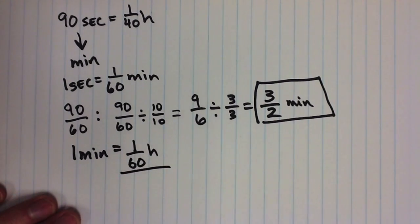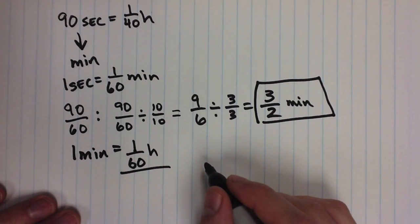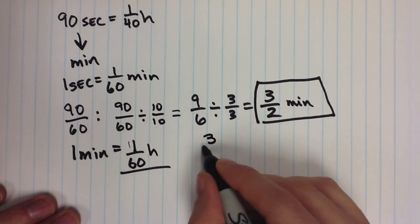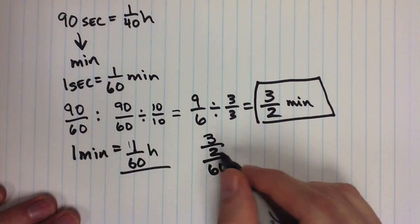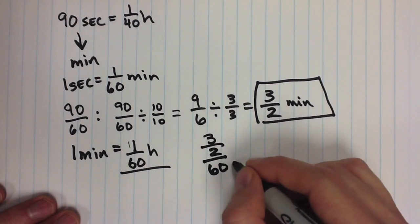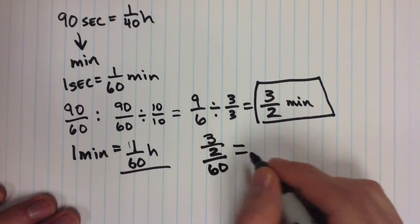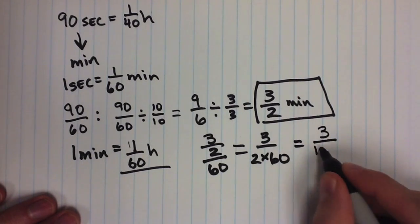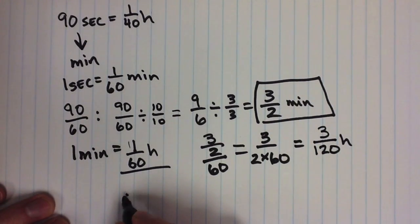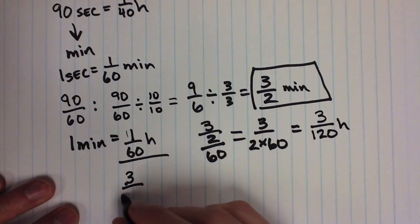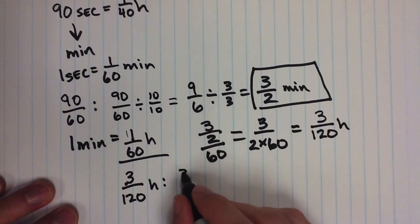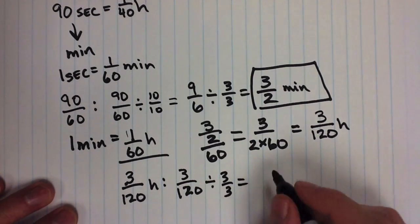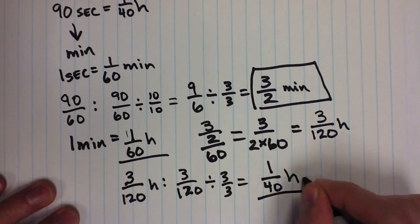Recall that one minute equals 1/60 of an hour, so we take 3/2 and multiply by 1/60. This gives us 3 divided by 2 divided by 60. Since both 2 and 60 are in the denominator, we multiply them: 3 over 120. Dividing both by 3 gives 1/40 hours — again, 1/40 of an hour, confirming our earlier result.